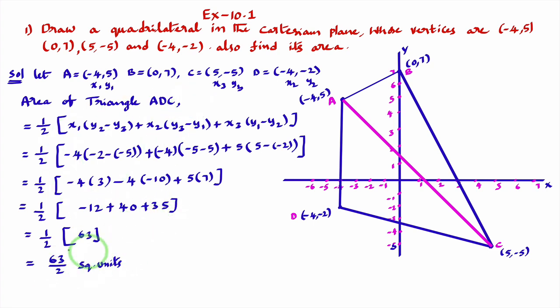So, area of triangle ADC is 63 divided by 2 square units. So, I calculated area of triangle ADC.